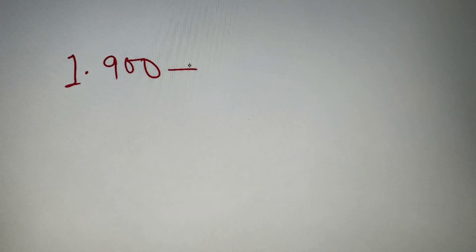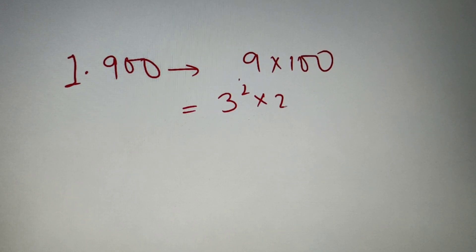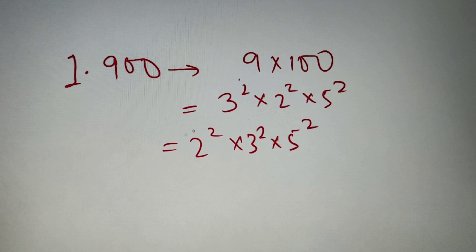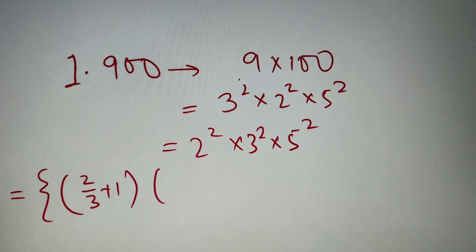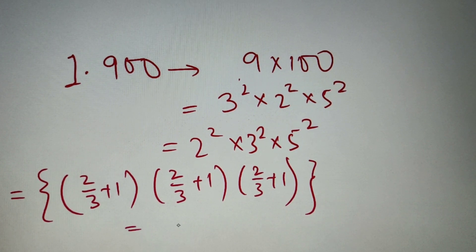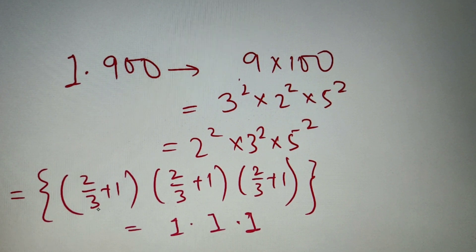For our first question we have to calculate how many factors of the number 900 are perfect cubes. According to our first step we prime factorize the number. 900 can be written as 9 into 100, where 9 equals 3 squared and 100 equals 2 squared into 5 squared. So the prime factorization is 2² × 3² × 5². Now we put this in the formula: integer value of (2/3) + 1, times integer value of (2/3) + 1, times integer value of (2/3) + 1. Each term equals 1, so the product is 1 × 1 × 1 = 1. The number of factors which are perfect cubes for 900 is equal to 1.